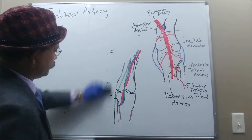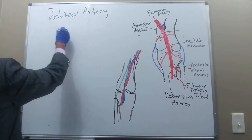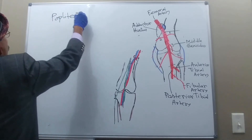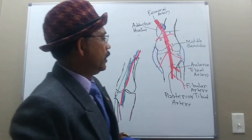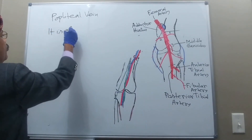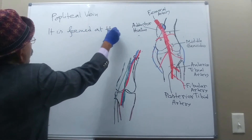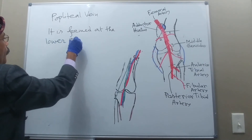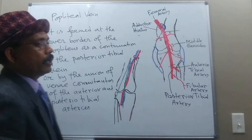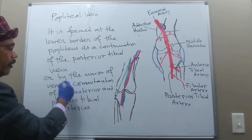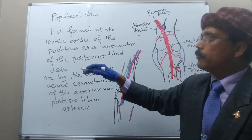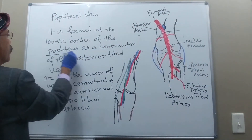Now we go to the popliteal vein. The popliteal vein is formed at the lower border of the popliteus muscle. It may be a continuation of the posterior tibial vein, or it may be formed by the union of the venae comitantes of the anterior and posterior tibial arteries.